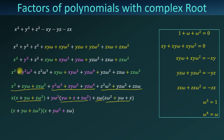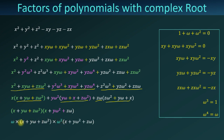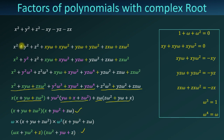We can also write this factor in other forms by multiplying omega cubed. We can split omega cubed as omega times omega squared. Multiplying omega by the expression gives omega·x plus y·omega squared plus z, and multiplying omega squared gives x·omega squared plus y·omega plus z. You can use any form of the factor for this polynomial.